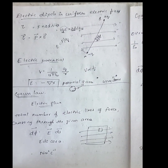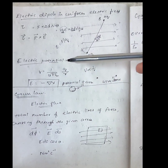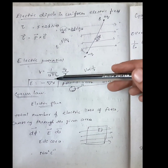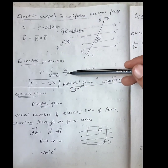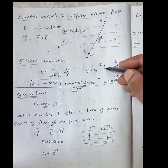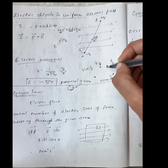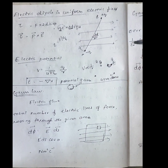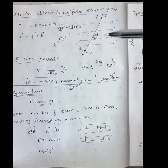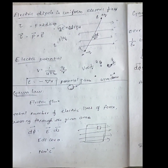The electric potential V is given by V = (1 / 4πε₀) × (q / r). The relationship between electric field and potential is E = −∇V, meaning the electric field is the negative gradient of the electric potential.